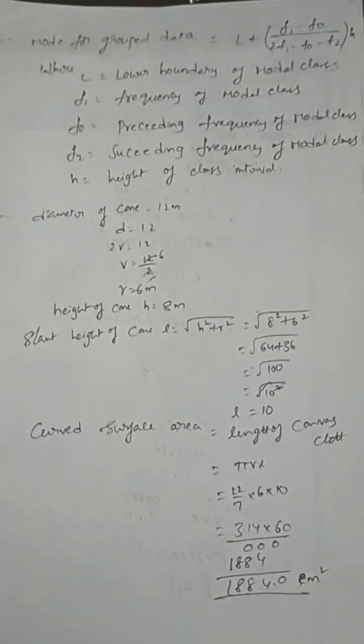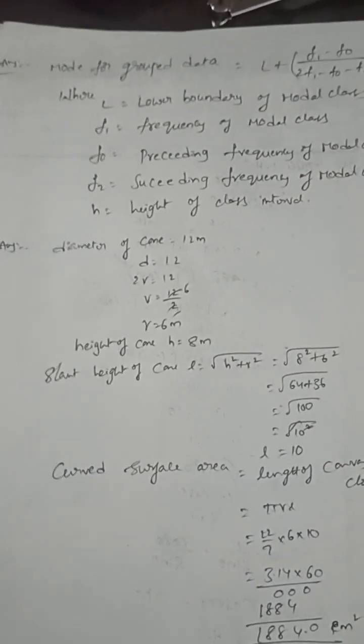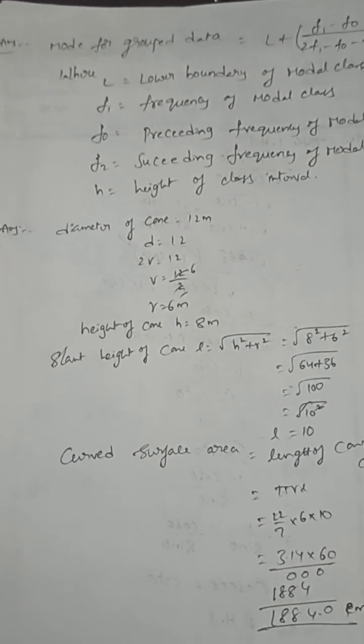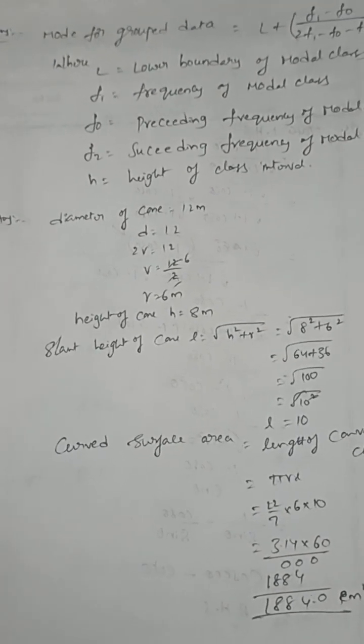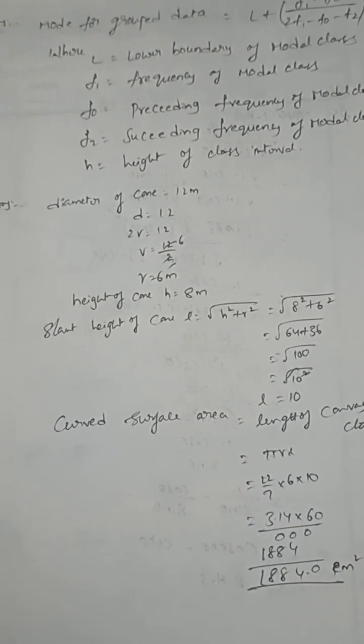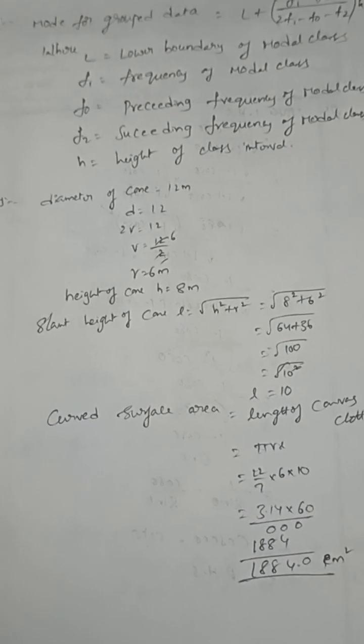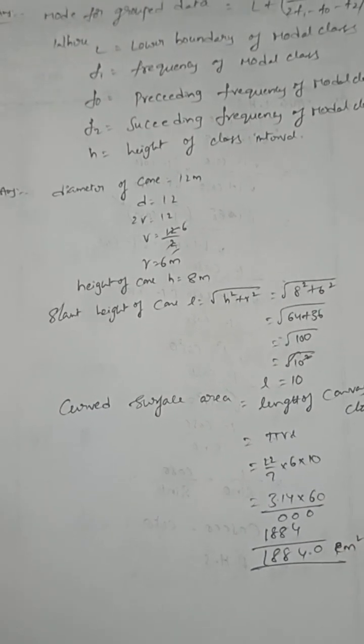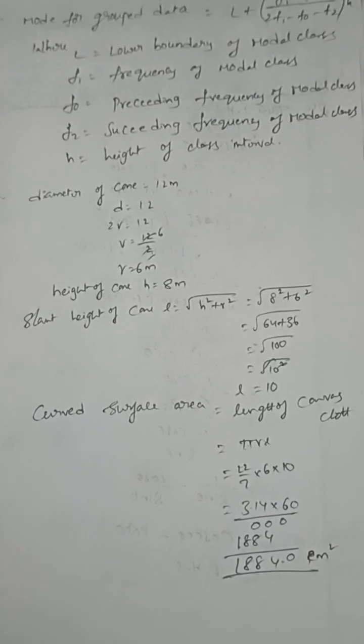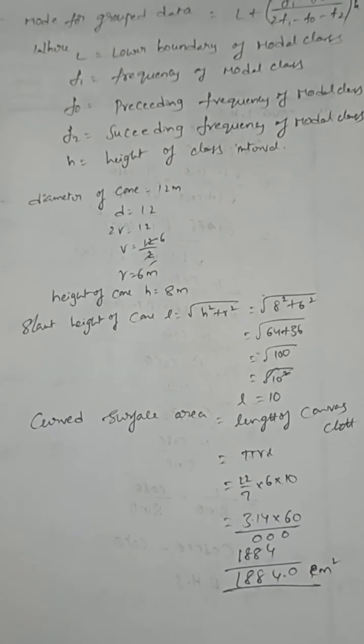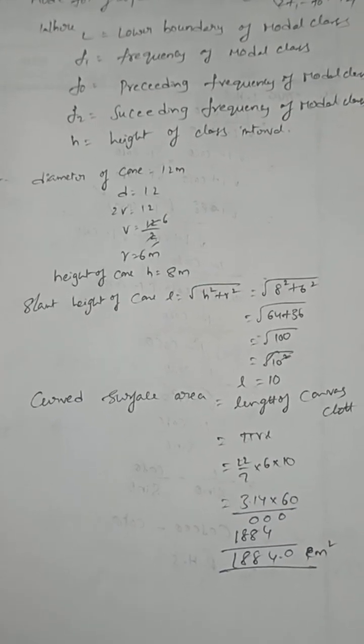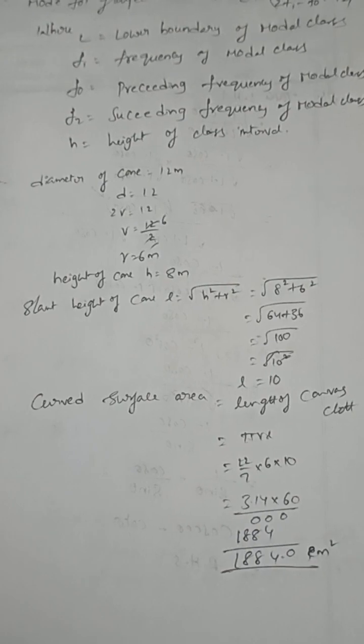The heap of rice is in the shape of a cone. The diameter of the cone is 12 meters, so radius is 6. Height of the cone is 8 meters. Slant height is 10. They're asking how much canvas cloth is required to cover the rice. By using curved surface area of cone: CSA = πRL. That is 188.4 square meters.